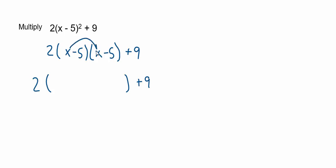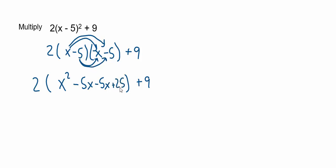So here goes. x times x is x squared. x times negative 5 would be negative 5x, subtract 5x. And then you get another one here, because you get another negative 5 times x, so you'll have another subtract 5x. And then finally, negative 5 times negative 5 is positive 25. I'm going to combine those middle terms before I distribute the two. So a negative 5x and a negative 5x is a negative 10x. I'll write that as subtract 10x. Copy the 25 and the parentheses and the plus 9.